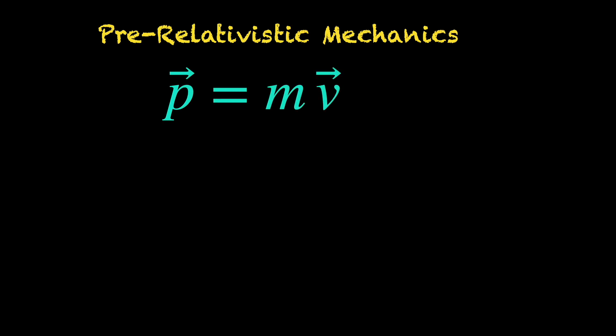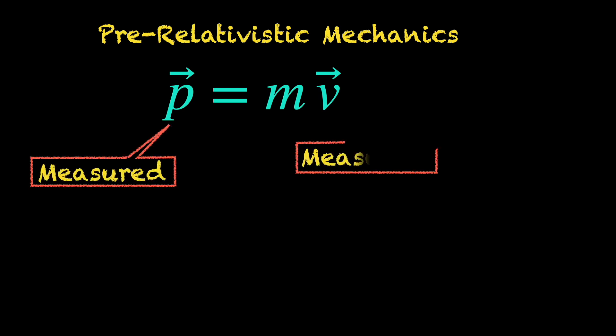and then measuring how much force the object imparts on the target, its momentum can also be measured. According to the pre-relativistic Newtonian mechanics, the momentum vector P of the object is its mass times its velocity vector.